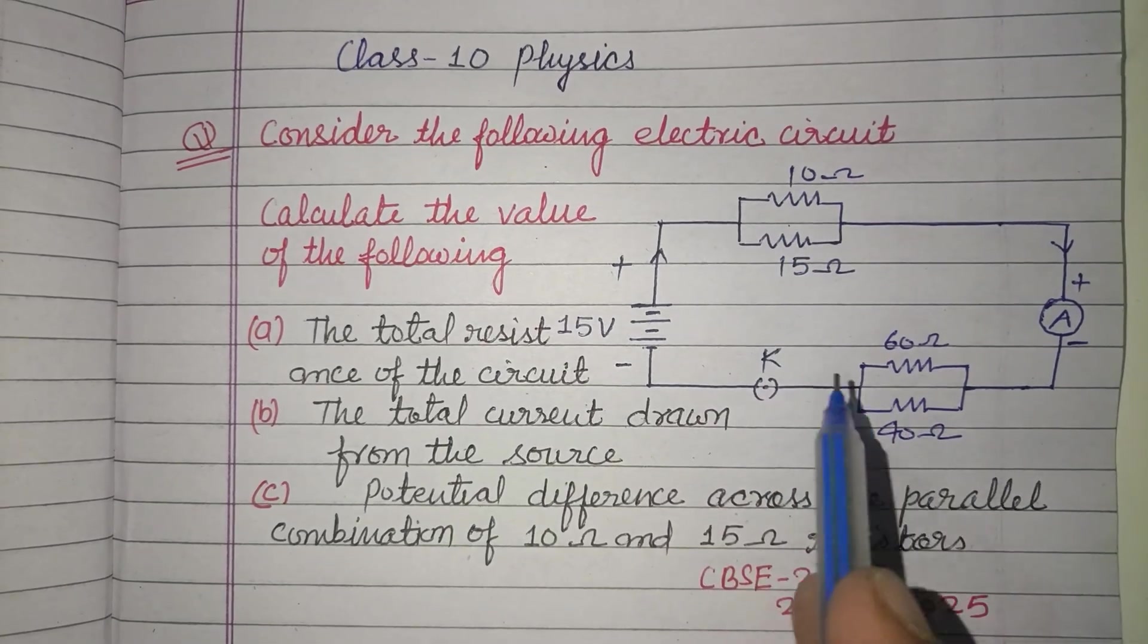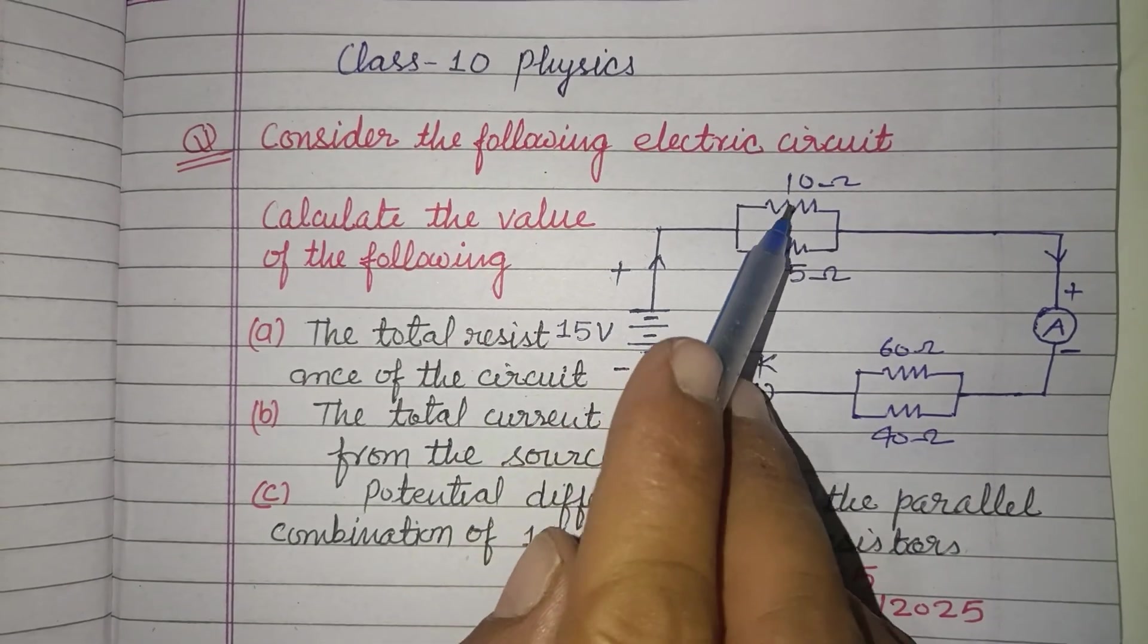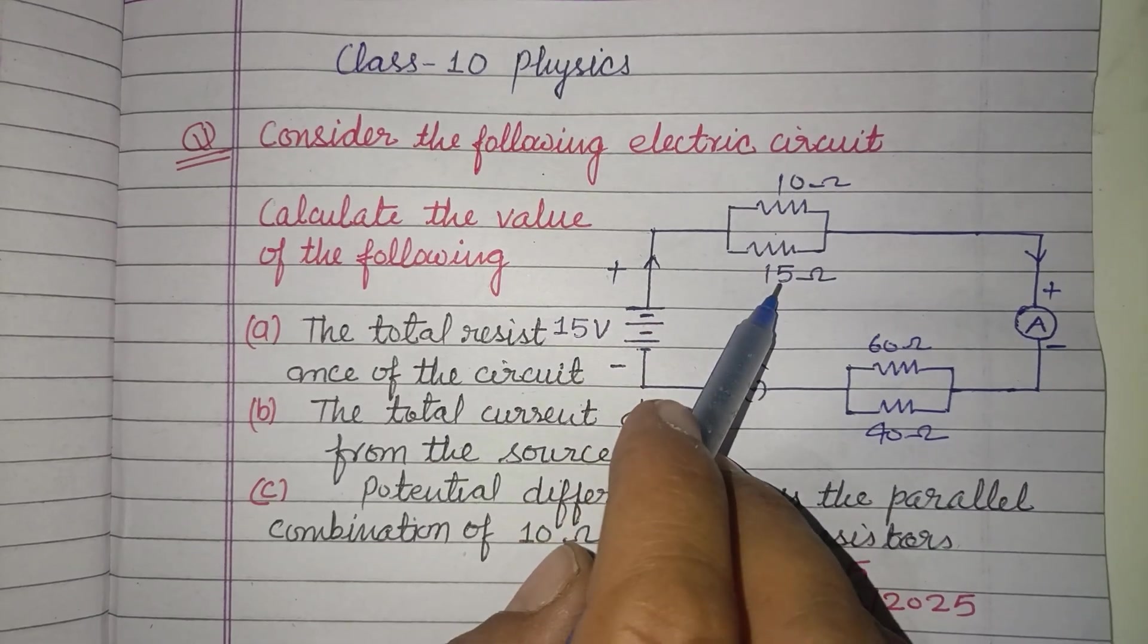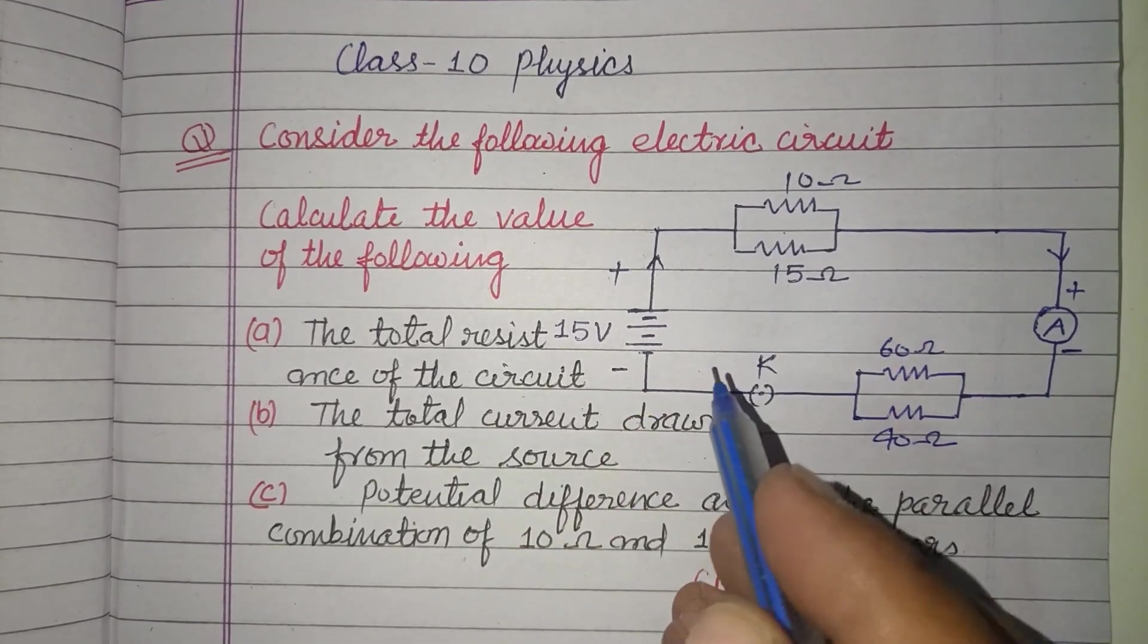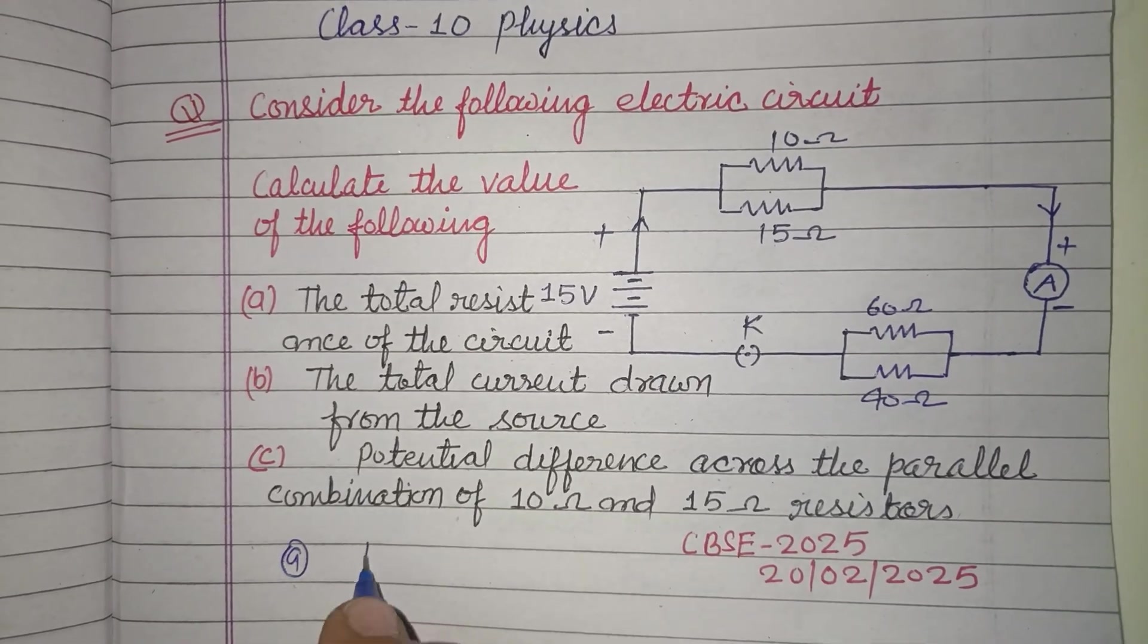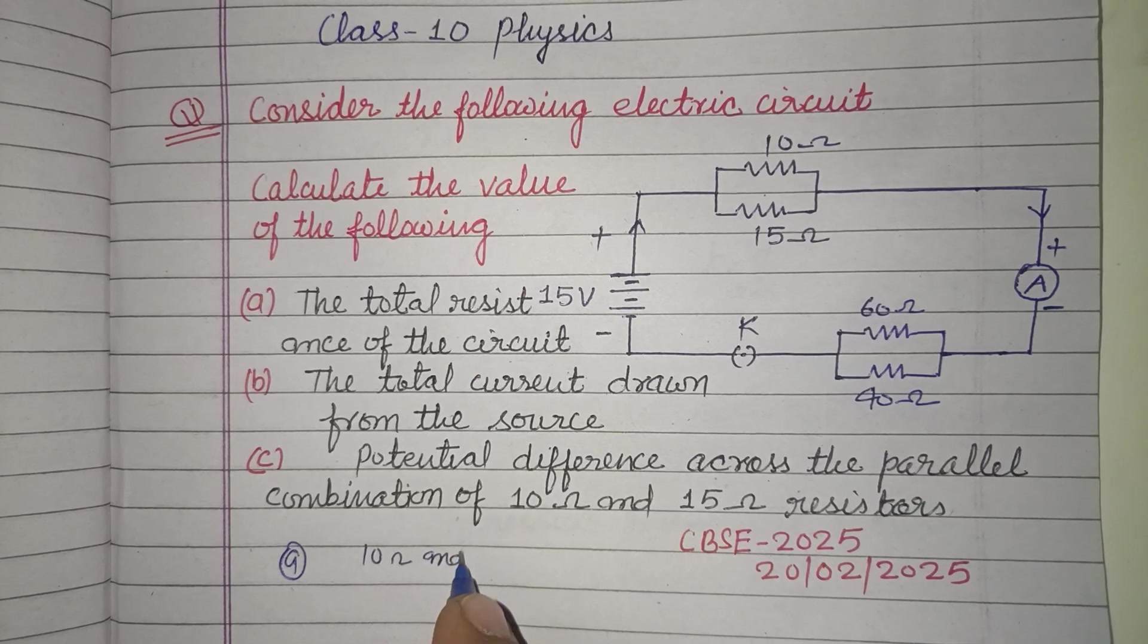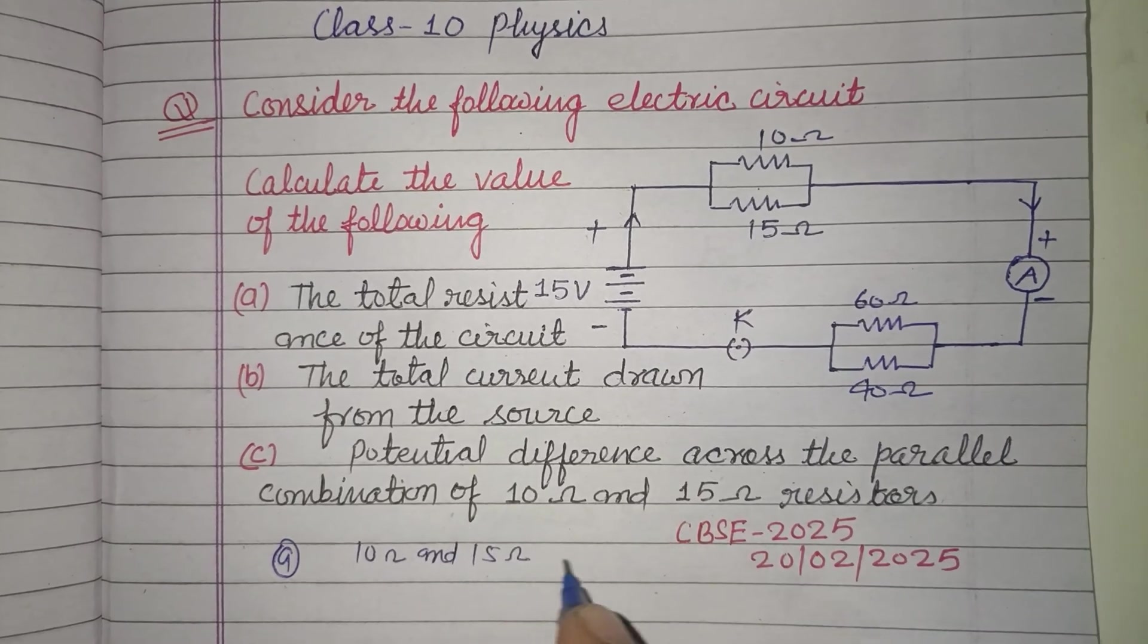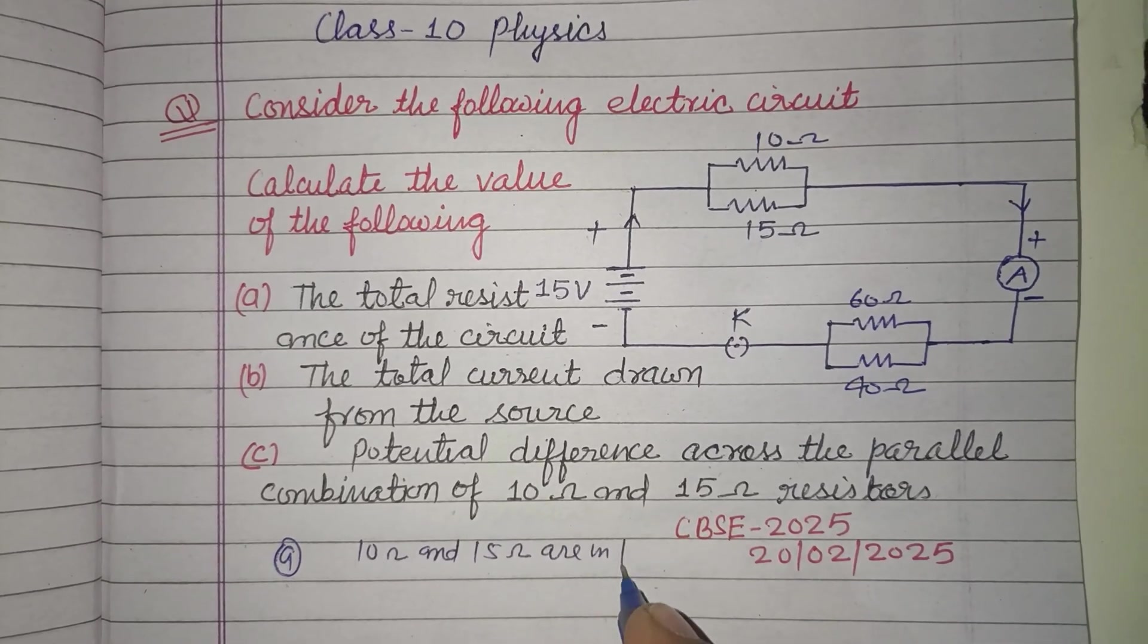First is 10 ohm and 15 ohm which are in parallel, so we can easily find. 10 ohm and 15 ohm are in parallel combination.